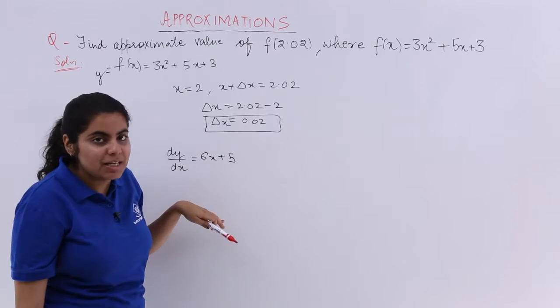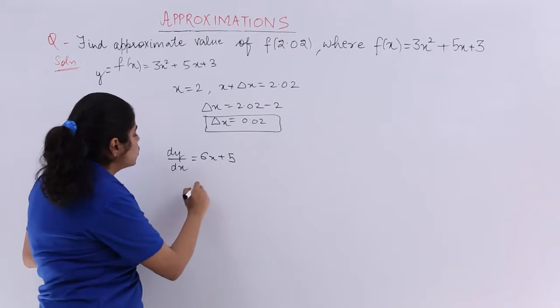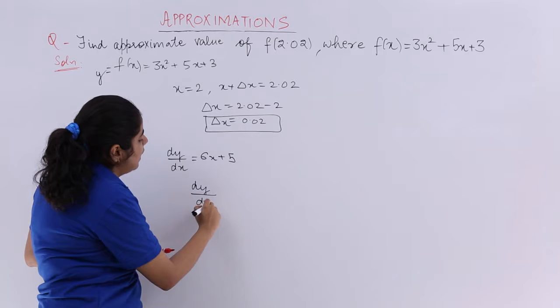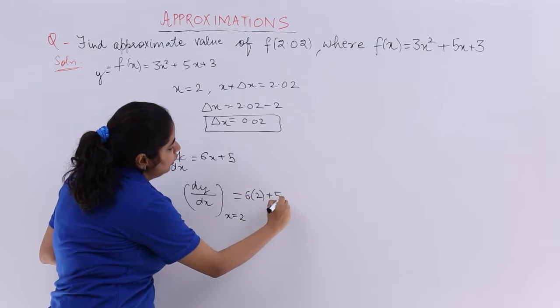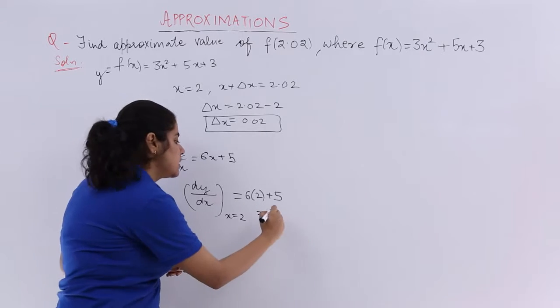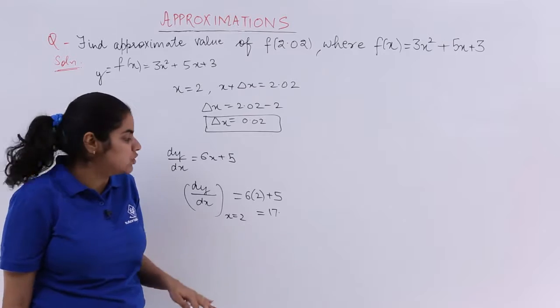Now, 6x + 5 is there and you know that my x equals 2. So what is the value of dy/dx at x = 2? You have to put 2. So it is 17. 6×2 is 12 plus 5 is 17.